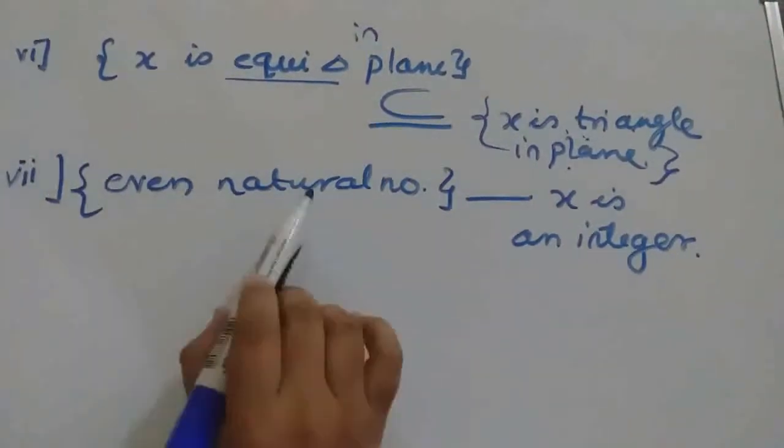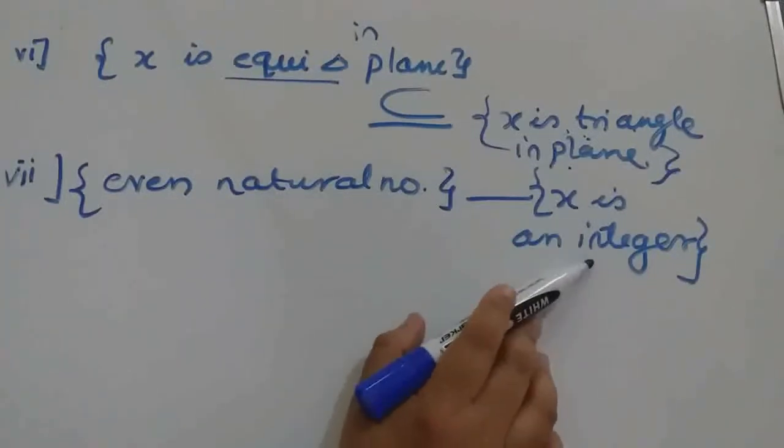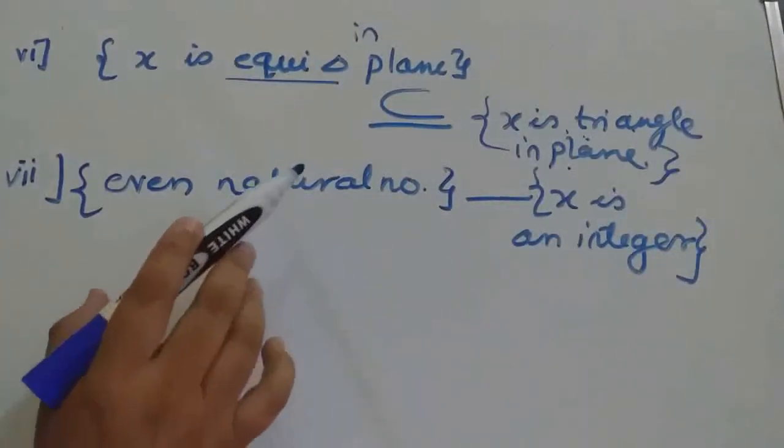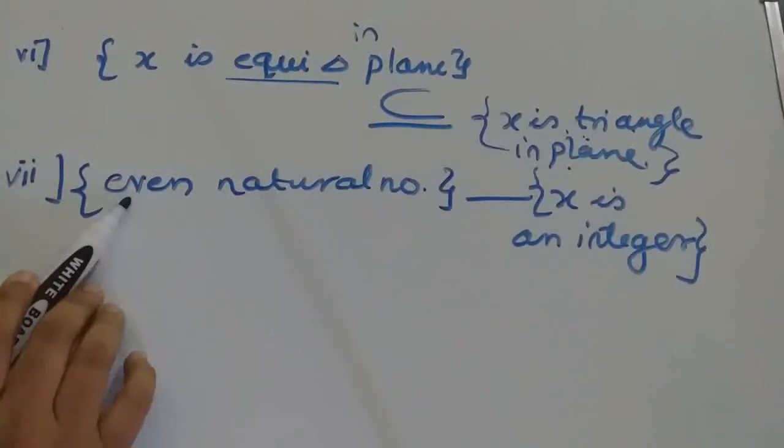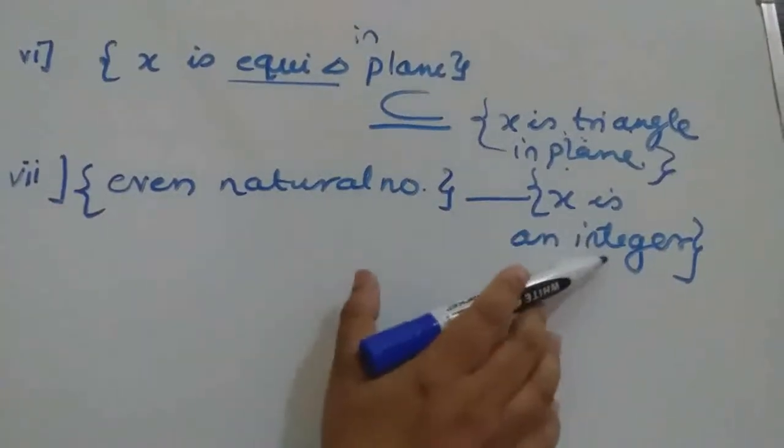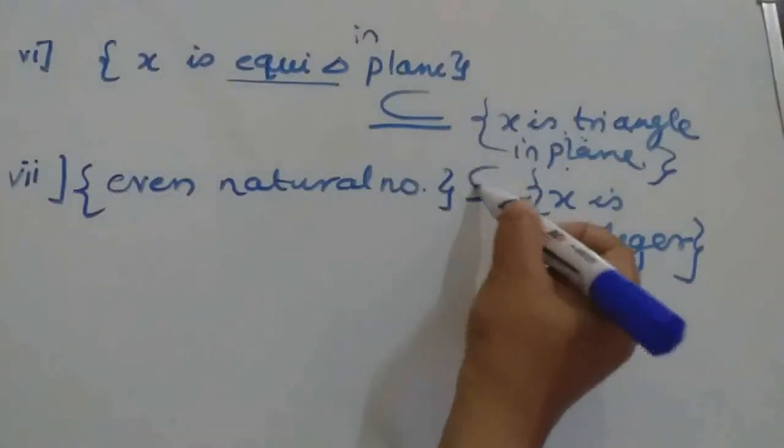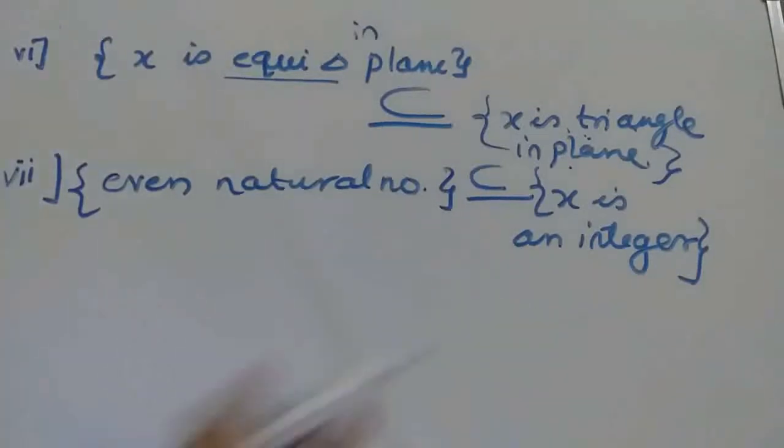Now even natural number, and next set is X is an integer. We know integer is a bigger set than natural number. In that also, even natural numbers only we should consider. So 2, 4, 6, all these elements will come. This one is a bigger set—in this all integers will come, negative also, positive also. So definitely this will be a subset of this particular set.